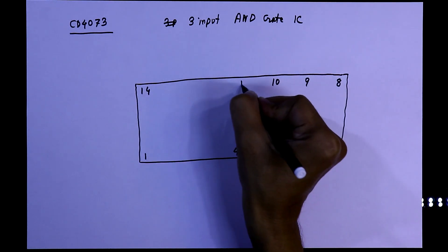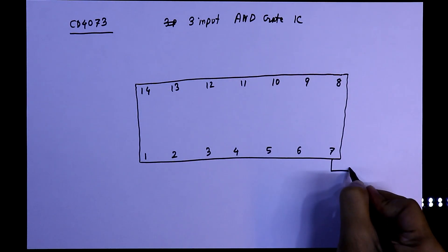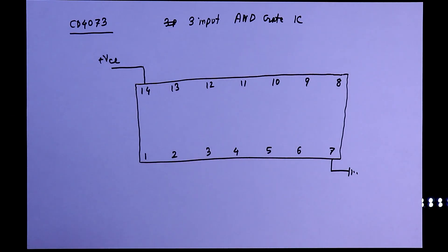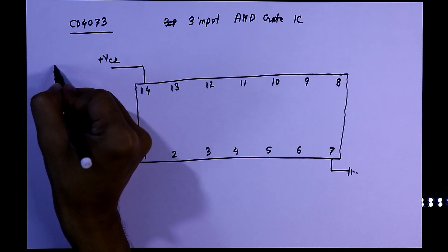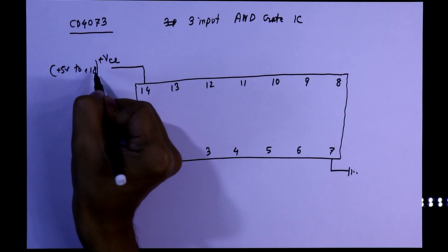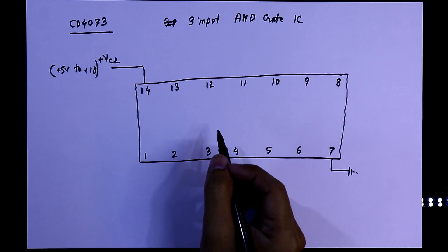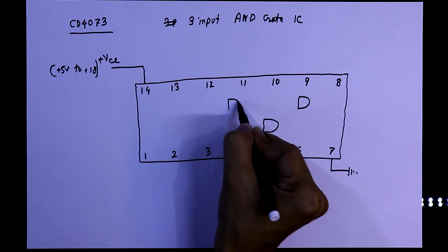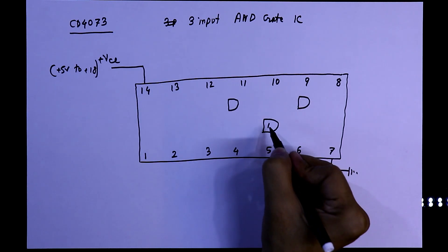It has 14 pins. Pin number 7 is the ground pin, and pin 14 is VCC. The supply voltage can be from 5V to plus 18V. It has 3 gates in it: gate 1, 2, and 3.